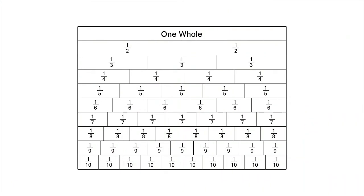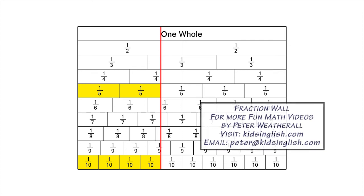Let's summarise what we've found. Two-fifths and four-tenths are equivalent fractions. One way to check for equivalent fractions is to see which fractions line up with two-fifths when you draw a vertical line from the end of two-fifths down the fraction wall. The end of four-tenths lines up nicely with two-fifths.